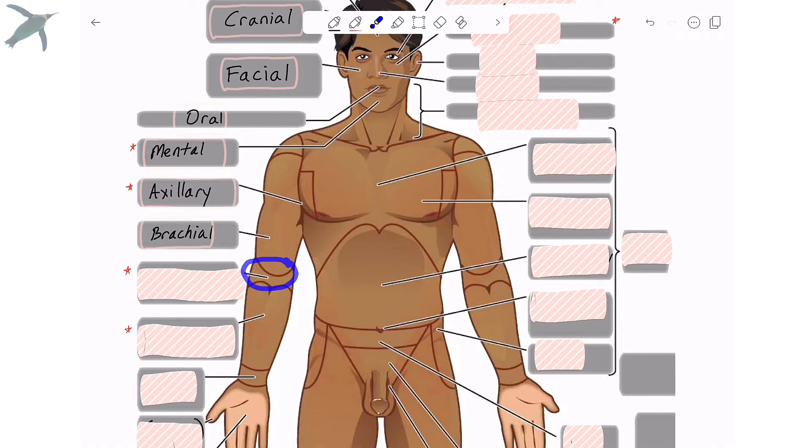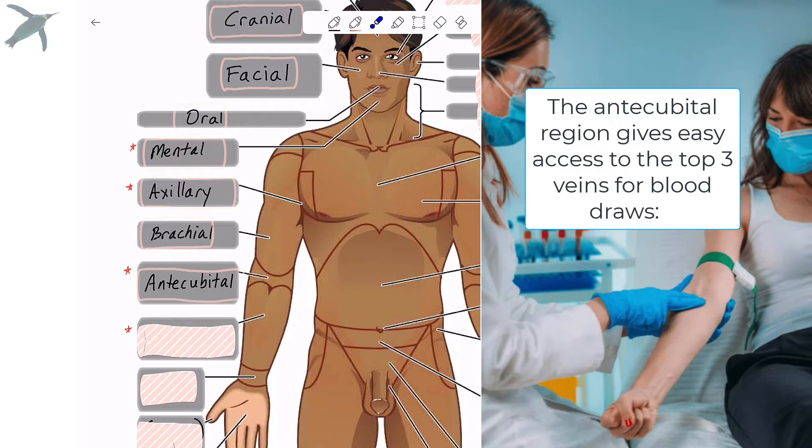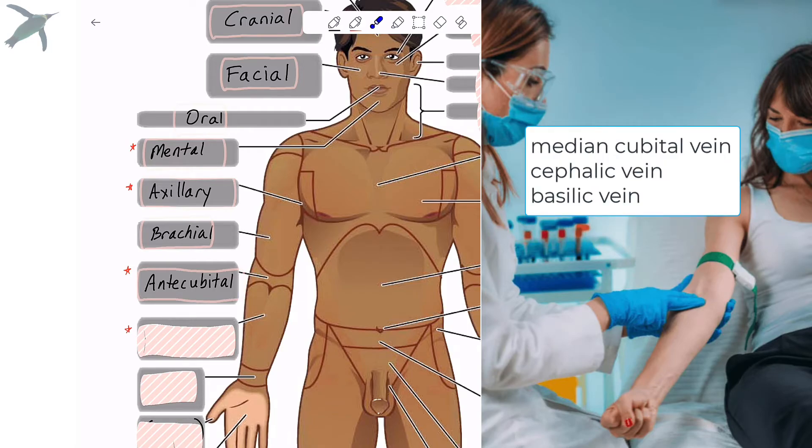Now this one, the front of the elbow is not so well known. It's called the anticubital region. So cubital is Latin for elbow. Anti means in front of or before. So literally it means in front of the elbow.